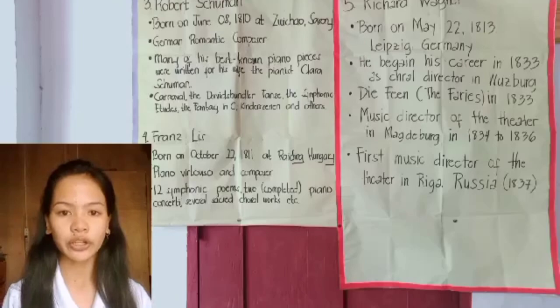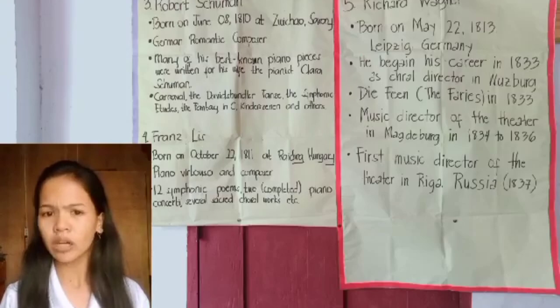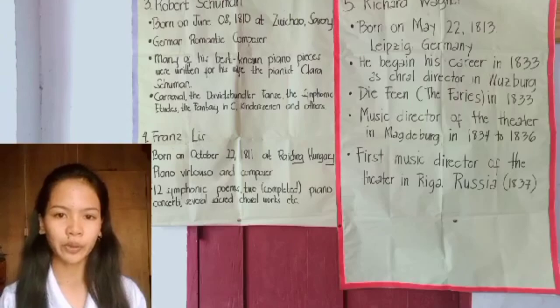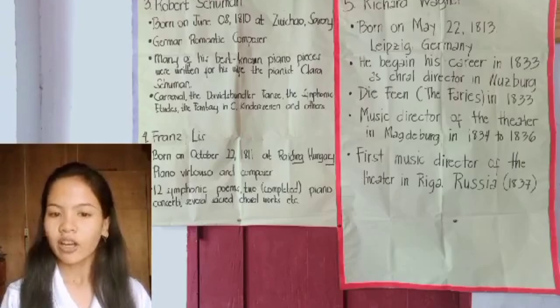Depression is a mood disorder marked by varying degrees of sadness, despair, and behavioral changes. Depression is very dangerous because it can lead to death — just as in the case of Robert Schumann, whose cause of death was depression.